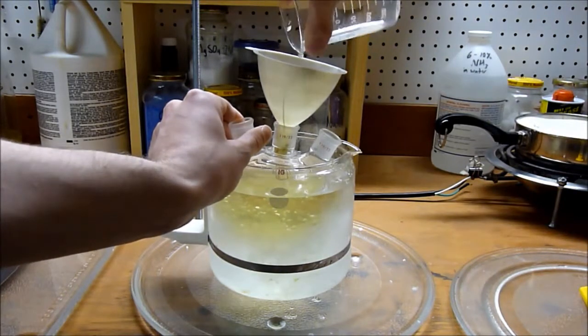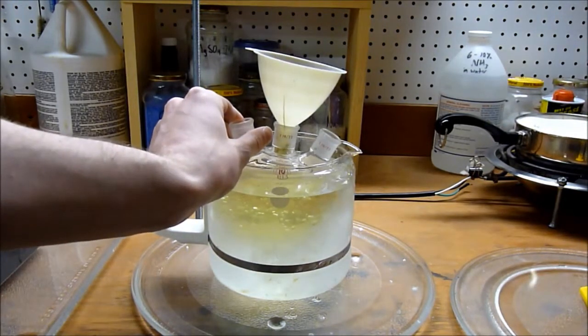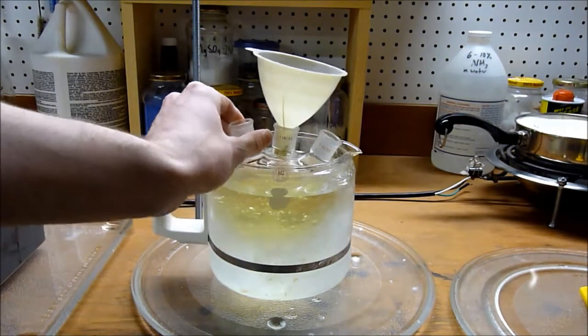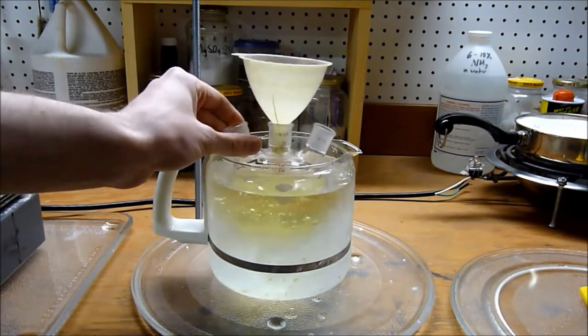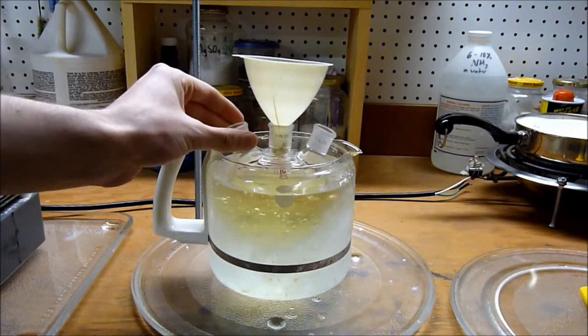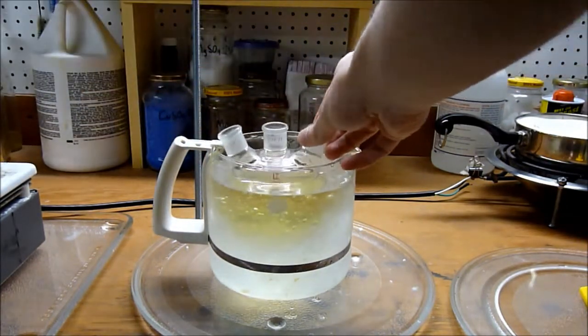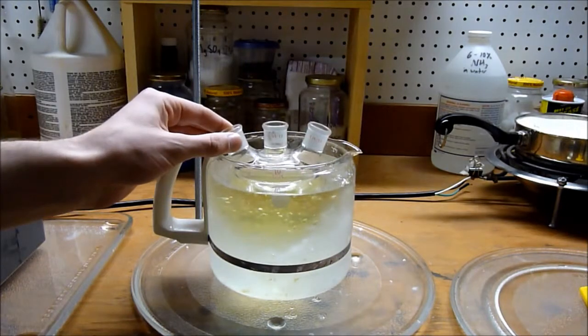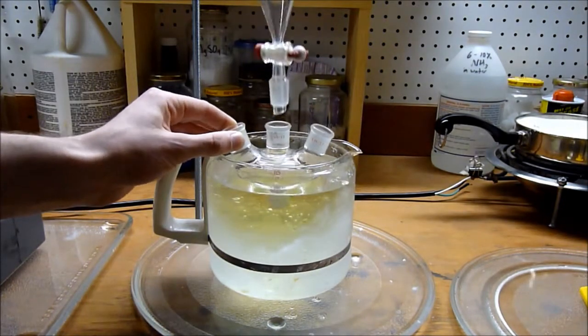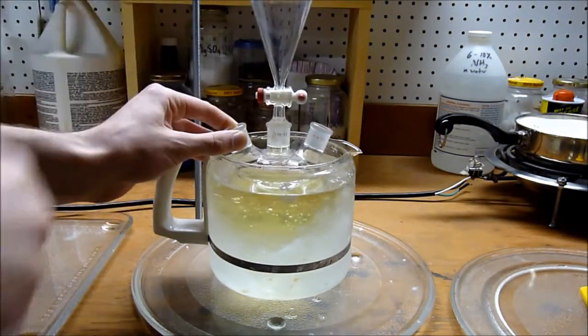Since chloroform boils at 70 something celsius, you don't want that boiling out into the room. Final yield for this reaction should be somewhere around 10 milliliters of chloroform. We're going to put the addition funnel in the middle and add the acetone using the addition funnel.